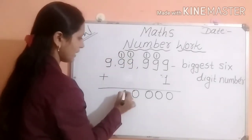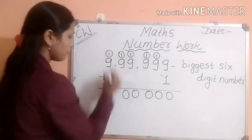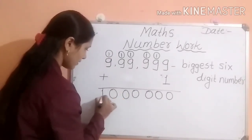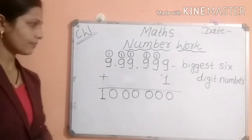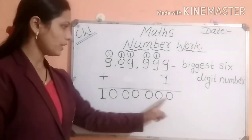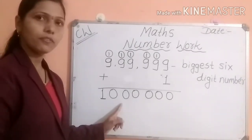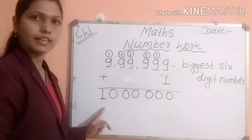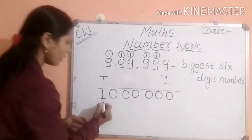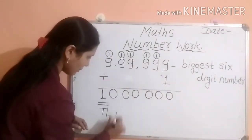Nine plus one is ten, one carry over; nine plus one is ten. How many digits are there now? One, two, three, four, five, six, and seven. So one place is increased — that is the ten lakh place.